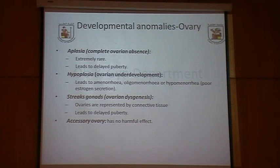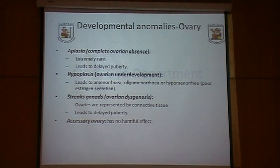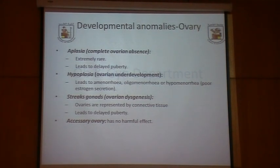Developmental abnormalities include: gonadal aplasia, where the ovary does not form at all — this is extremely rare and leads to hypergonadotropic hypogonadism with elevated FSH and LH but no ovary, resulting in failure of secondary sexual development and primary amenorrhea. Hypoplasia or ovarian underdevelopment leads to amenorrhea, oligomenorrhea, or hypomenorrhea. Streak gonads, or ovarian dysgenesis, occurs in individuals with only one X chromosome such as Turner's syndrome; the ovaries are represented by connective tissue, leading to primary amenorrhea.